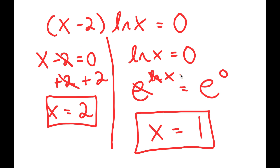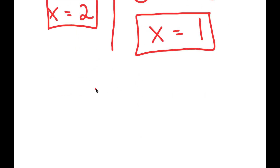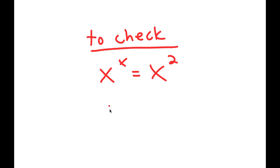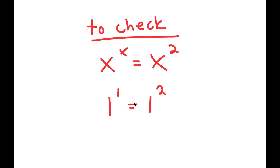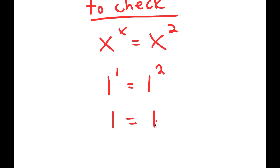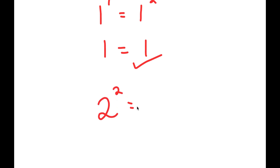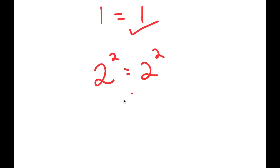Now that I have two solutions for x, I'm going to check to see if these are right. My equation is x to the power of x is equal to x to the power of 2. Let's first check x equals 1: 1 to the power of 1 is equal to 1 to the power of 2. 1 to the power of 1 is 1, and 1 to the power of 2 is also 1, so this is right. Now checking x equals 2: 2 to the power of 2 is equal to 2 to the power of 2. 2 to the power of 2 is 4, so I get 4 equals 4 — and this is right as well.